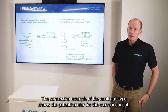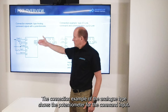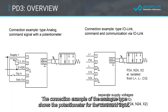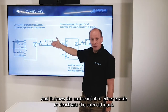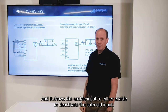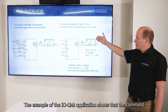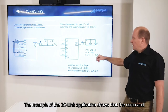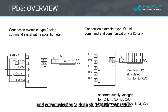The connection example of the analog type shows the pointed geometry for the command input and it shows the enable input to either enable or deactivate the solenoid output. The example of the IO-Link application shows that the command and communication is done via IO-Link connection.